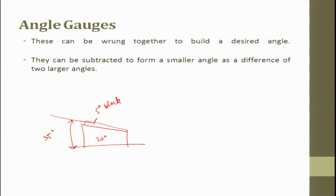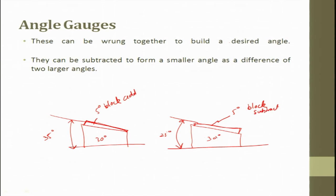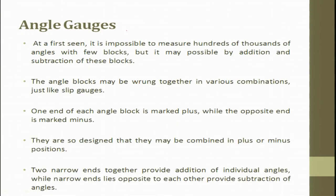For example, a 30-degree block plus a 5-degree block gives 35 degrees. In reverse direction, a 30-degree block minus a 5-degree block gives 25 degrees. When the narrow ends are together, they provide addition of individual angles; when narrow ends are opposite to each other, they provide subtraction. This is the concept of ringing to form the angle — you can add or subtract blocks to generate different angles for measurement.